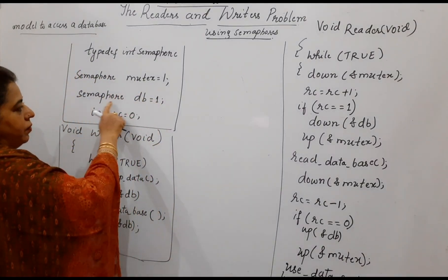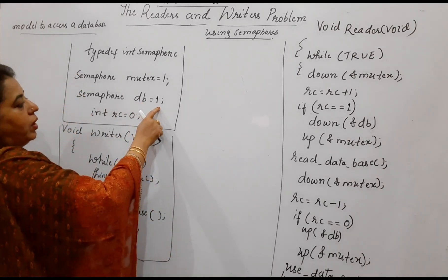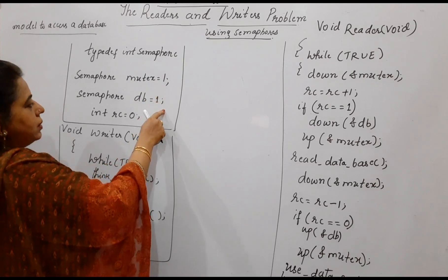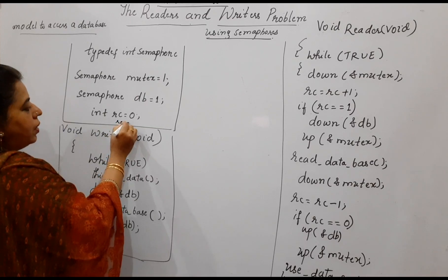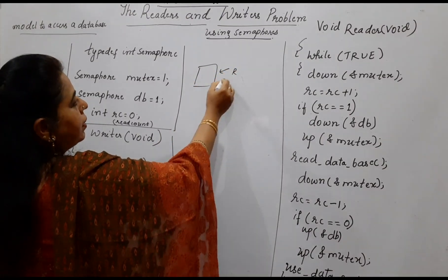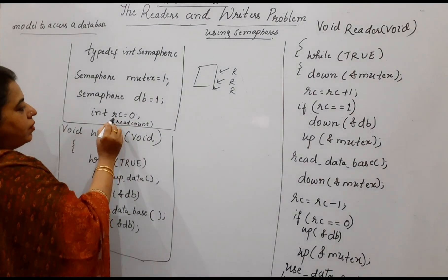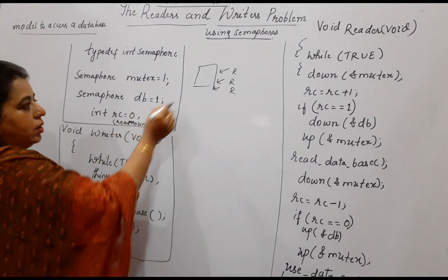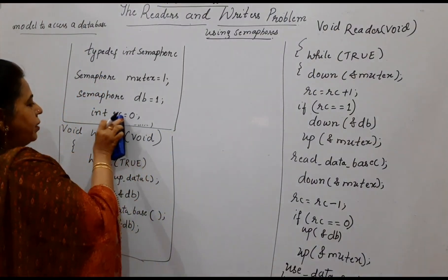We have a semaphore called DB, which is initialized to 1. This semaphore will get only two values, 1 and 0 — that means it is like a binary semaphore. Here we have taken a normal variable RC. RC stands for read count. Whatever number of readers want to access — the first reader, second reader, third reader — to keep count of the readers, we are using the variable RC. RC stands for readers count. So we want to keep track of the readers count. These are the different variables.